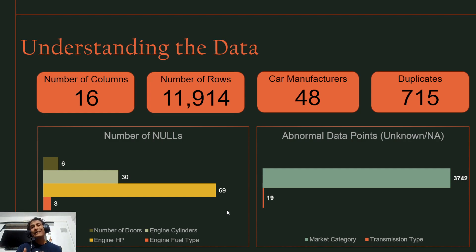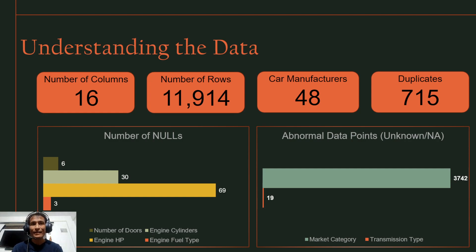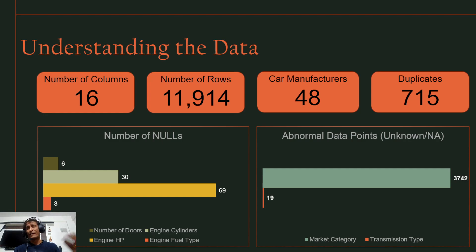Digging deeper, two features had abnormal data. Market category had a subcategory called 'unknown' with about 3,742 data points, which needed to be addressed for meaningful analysis. Additionally, transmission type had about 19 NAs present as a subcategory.